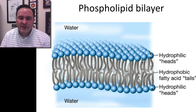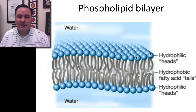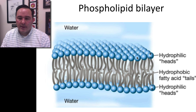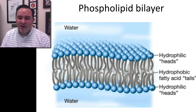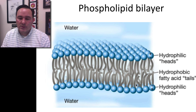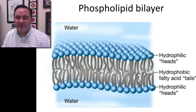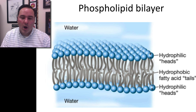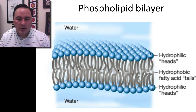If you put a bunch of these together, they form a mat of phospholipids — a layer. And if it's in water, you can form a bilayer, because the hydrophilic heads always want to go towards the water. So on both ends they're going towards the water, and on the inside the hydrophobic fatty acid tails face each other. There's essentially no water molecules in between here.